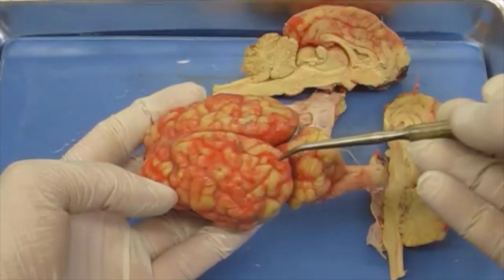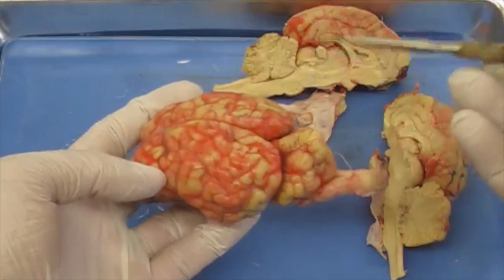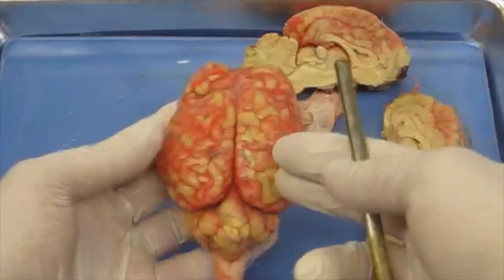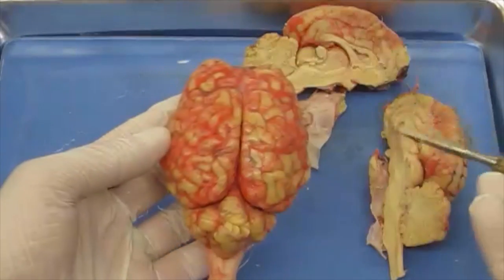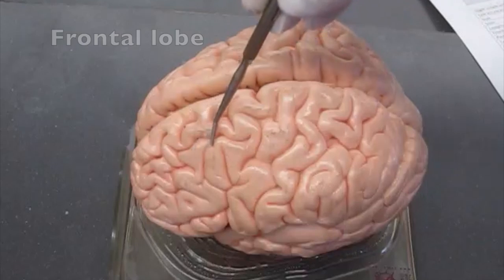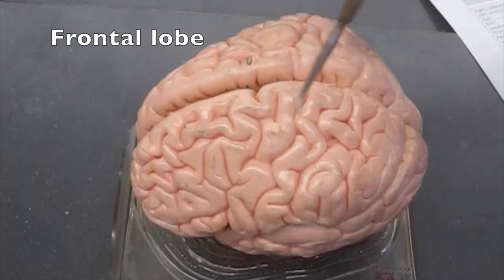Think back to the frontal, parietal, temporal, and occipital bones of the skull to help remember where these lobes are located. The human frontal lobe is one key region we'll discuss.